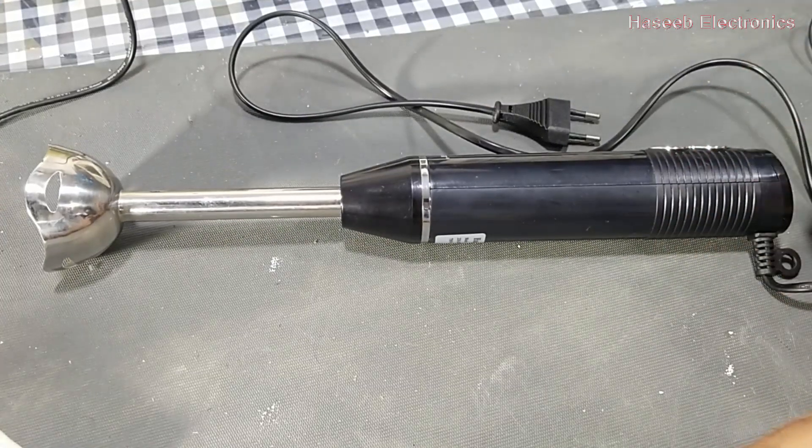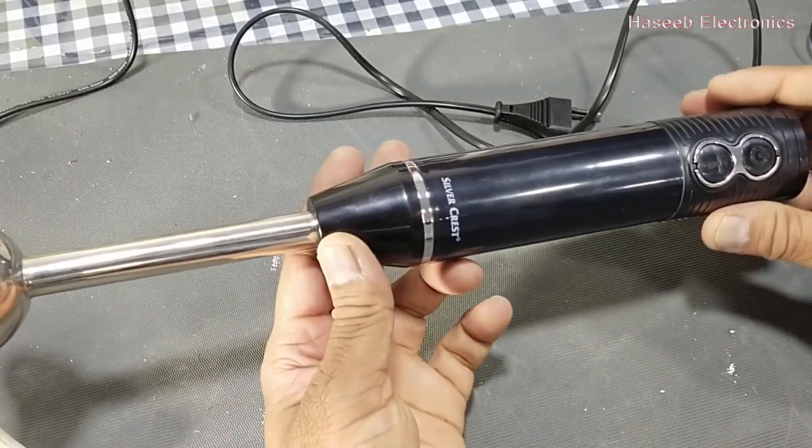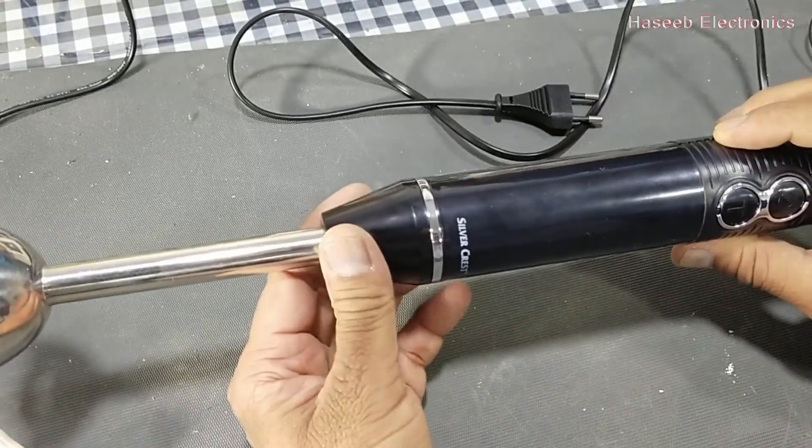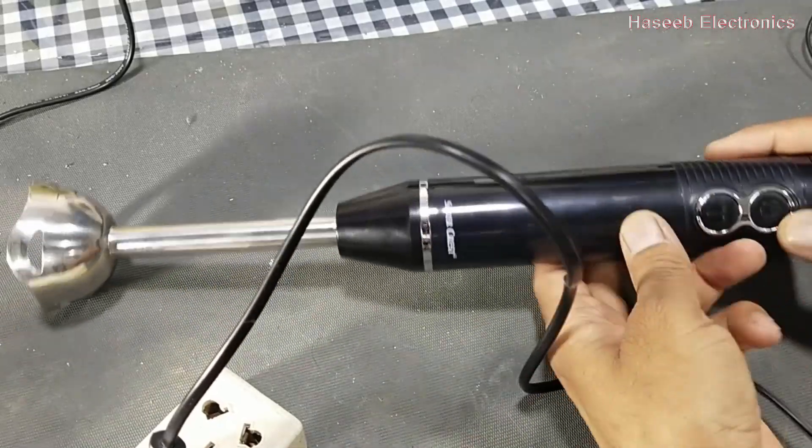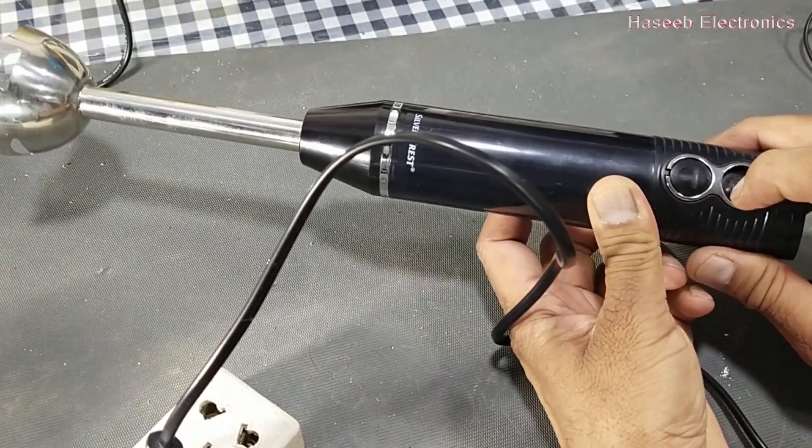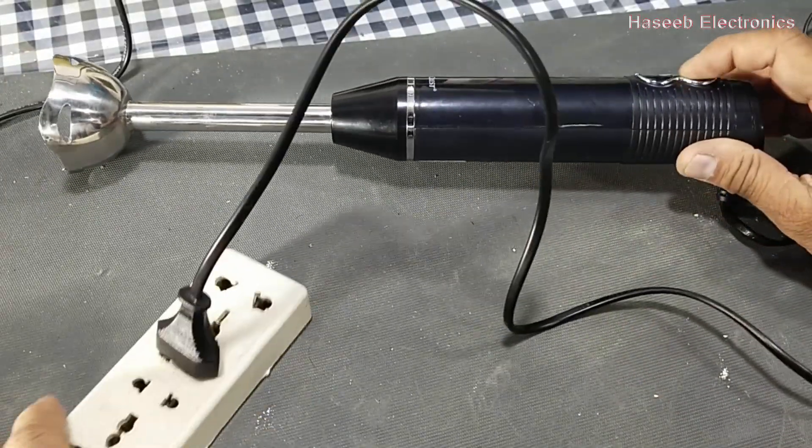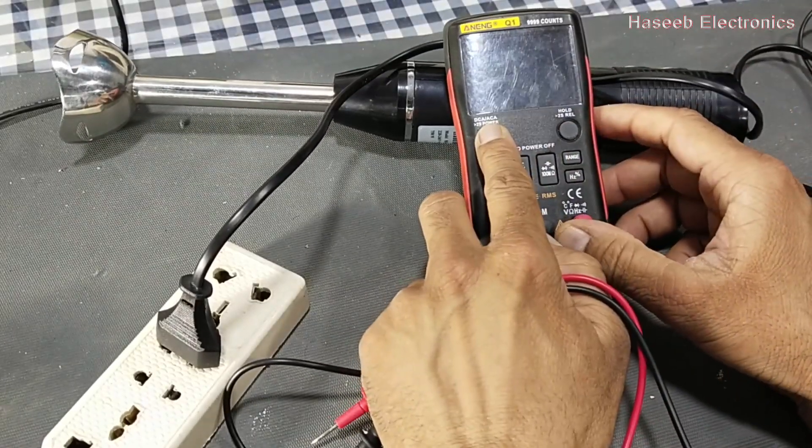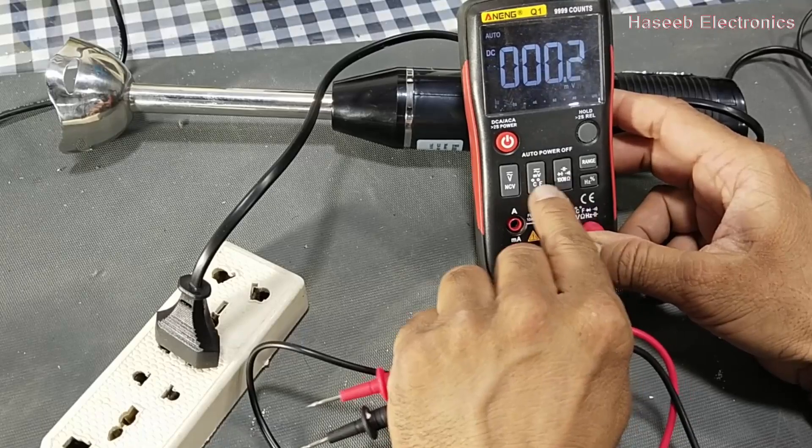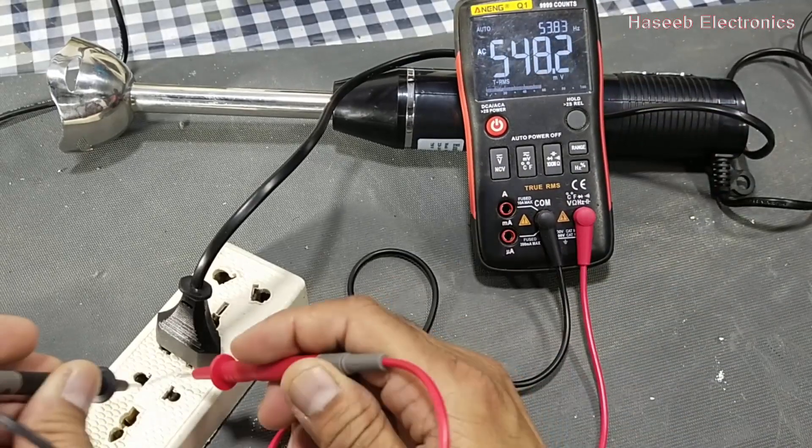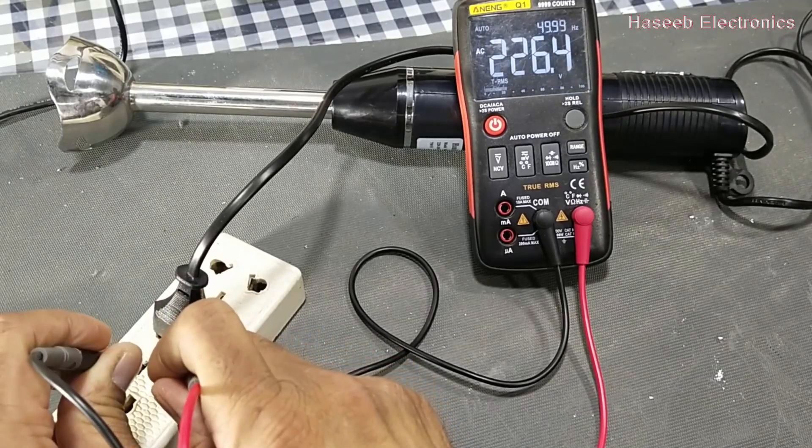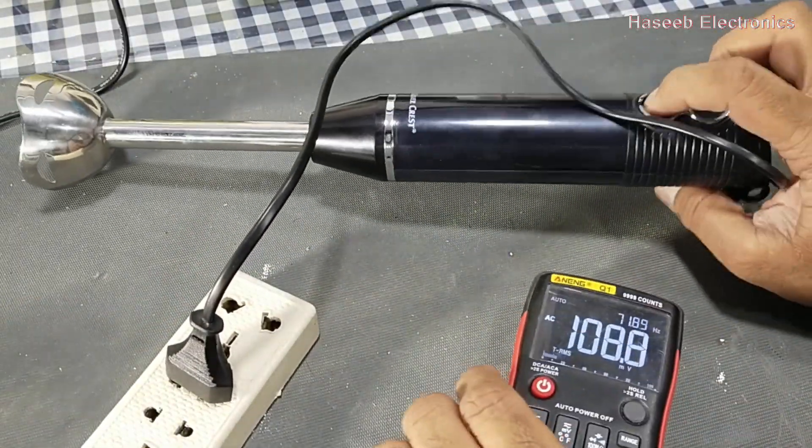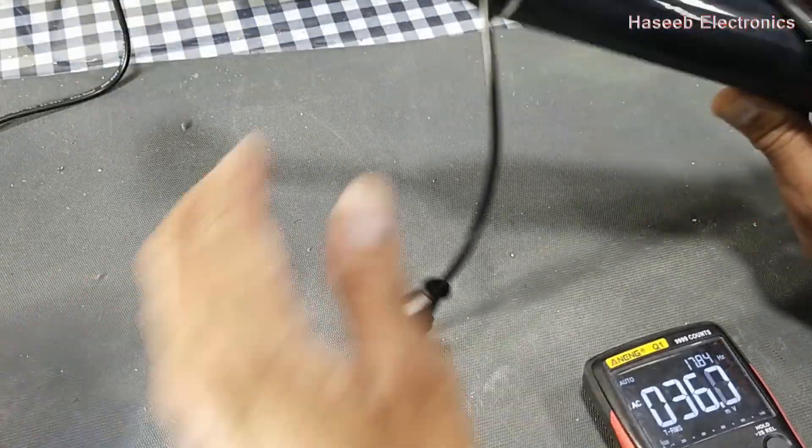Assalamualaikum warahmatullahi wabarakatuh friends, welcome to my channel. Today I have this Silvercrest hand blender, it is not working. I have 226 volts in the socket, 229 volts in the socket. This device has no response, let's check it.